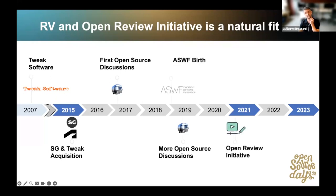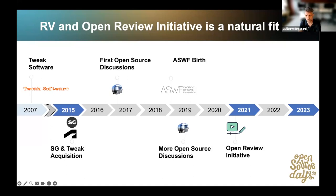It took the creation of the Academy Software Foundation and the Open Review Initiative to move things forward. The Open Review Initiative's mission aligned perfectly with what Autodesk had in mind for RV's future. ASWF was the right home for RV, and the timing with the Open Review Initiative being created was perfect. OpenRV finally saw the light of day on January 18, 2023.